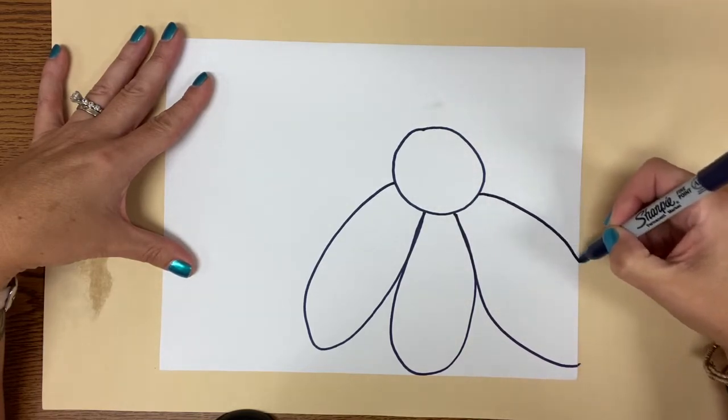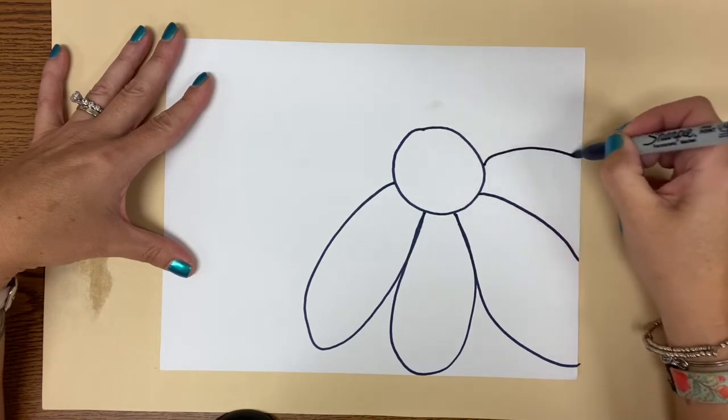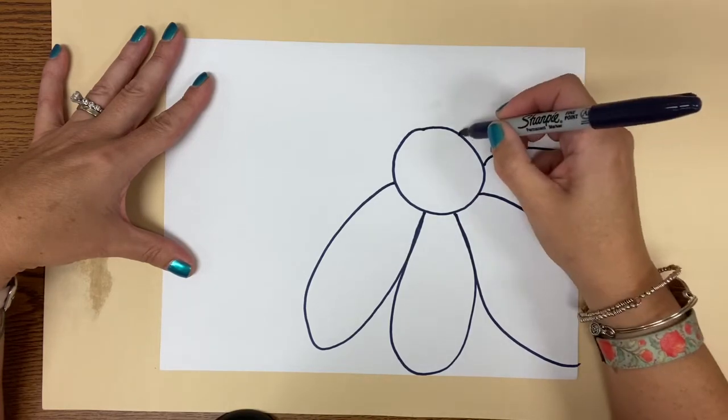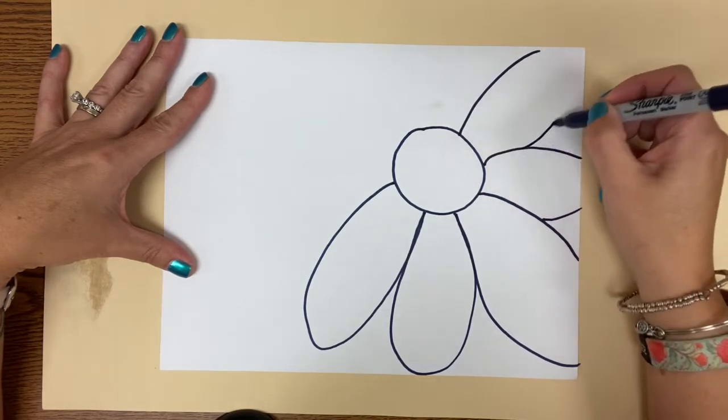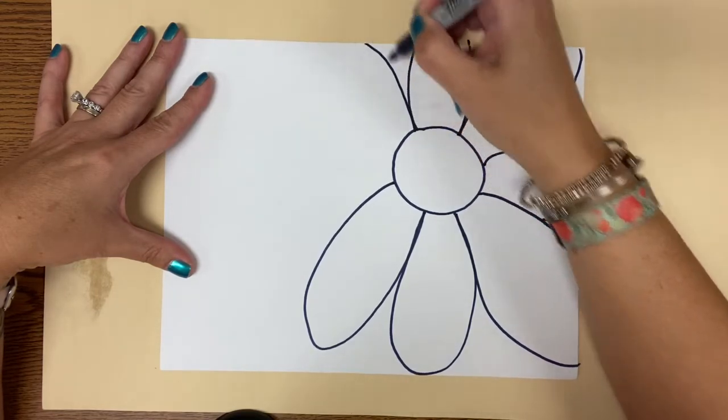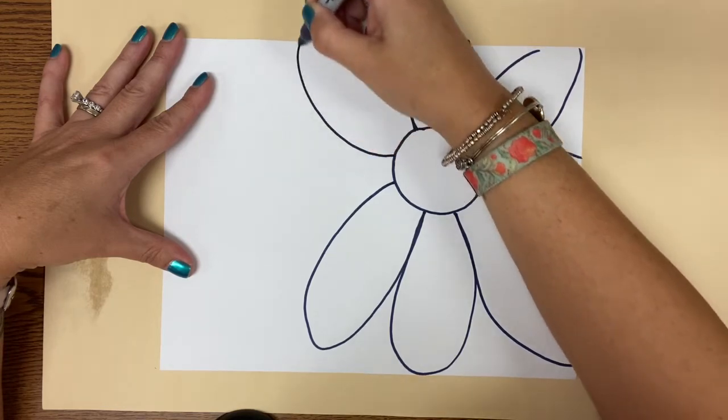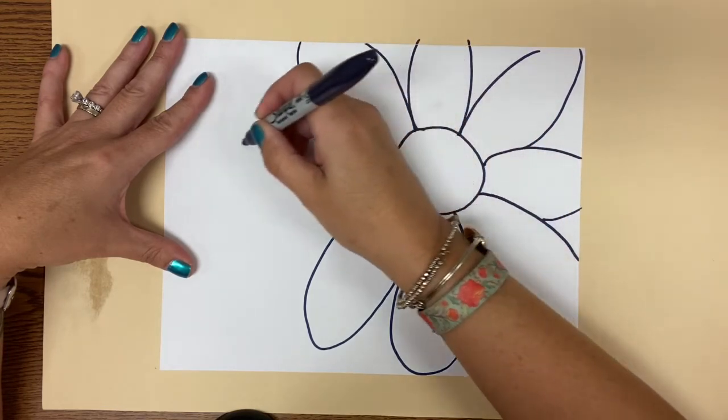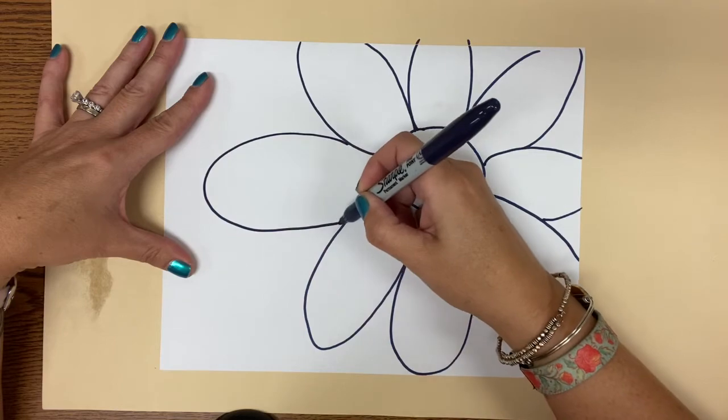You can go all the way to the edge of the paper. You can go right off the edge of the paper. Make your flower so big it takes up a lot of room. So I'm going to go all the way around with my ovals and finish up one right here.